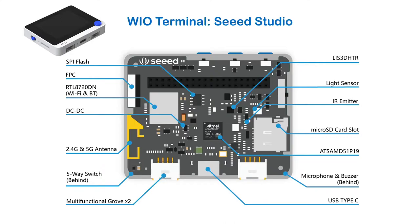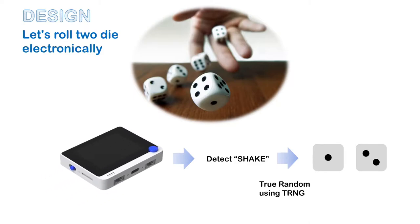The other side has a display. So we're going to use the display, we're going to use the random number generator, and we're going to use the accelerometer. The design of the project is: if I actually move this WIO Terminal to create a motion like rolling a die, it should detect that motion — I would detect that as a shake. Then I would call the true random number generator, generate two random numbers, and display it on the screen. That is the whole design of this project.